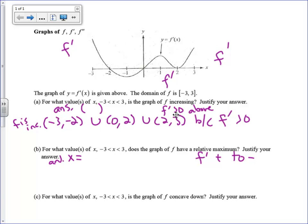It looks like there's only one place where f' crosses from above the x-axis to below, and that happens at negative 2. So I'll say that f has a relative maximum at x equals negative 2 because f' goes from positive to negative, plus to minus.